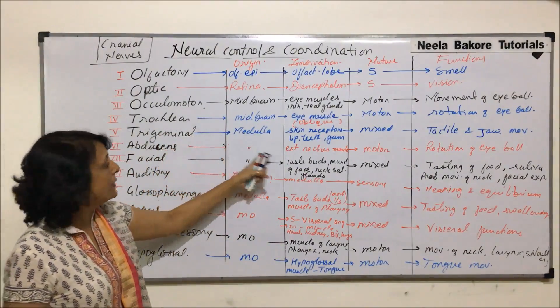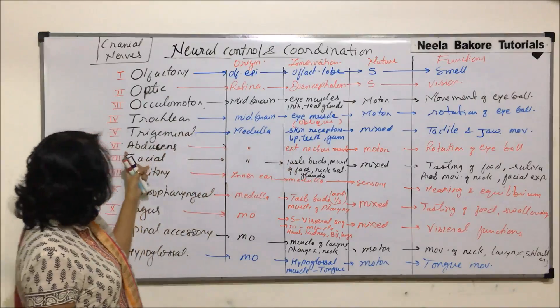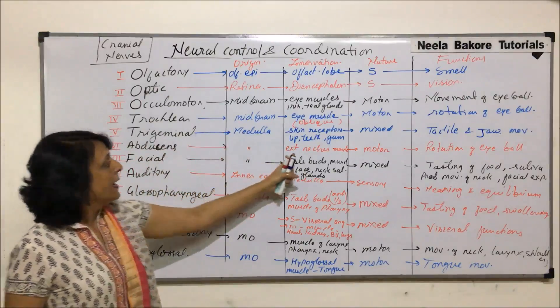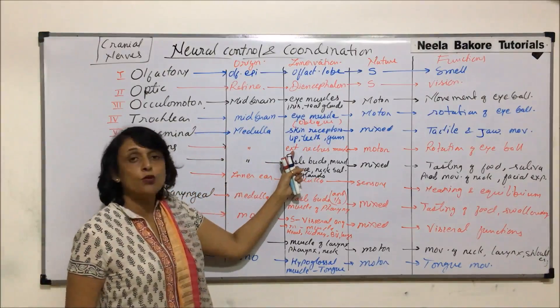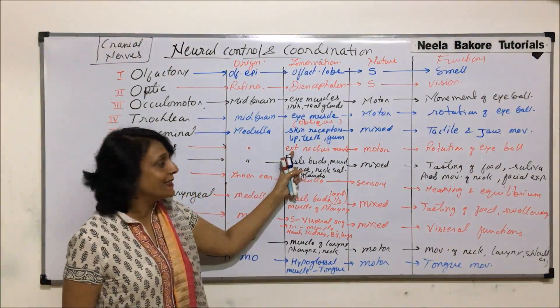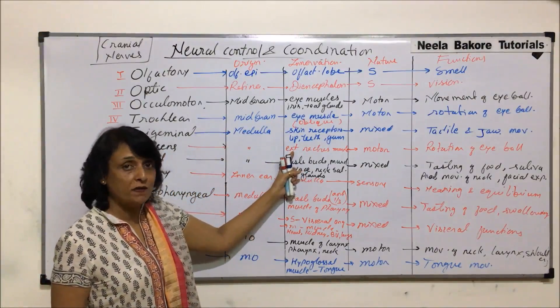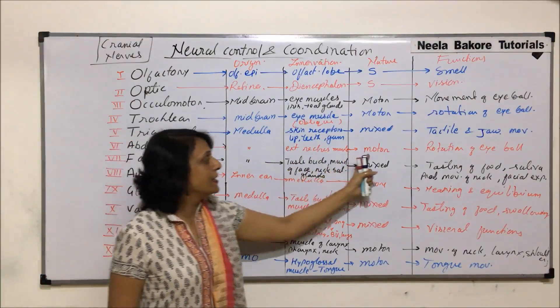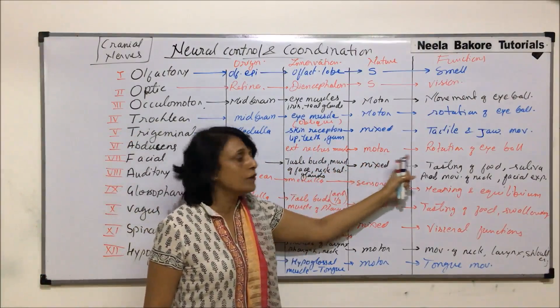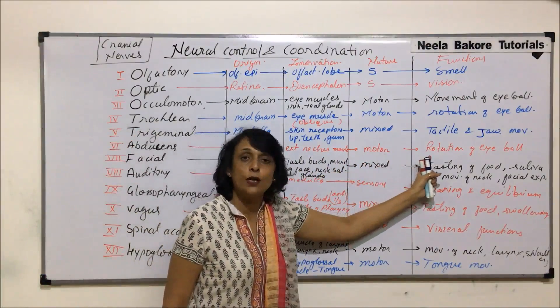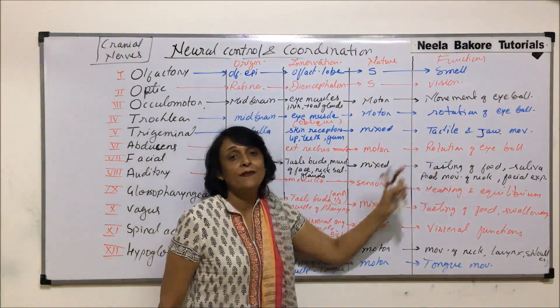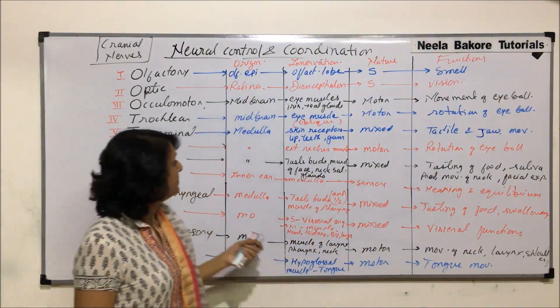The sixth cranial nerve is abducens. It also arises from the medulla and goes to the external rectus muscle of the eye. It is a motor nerve and helps in rotation of the eyeball.